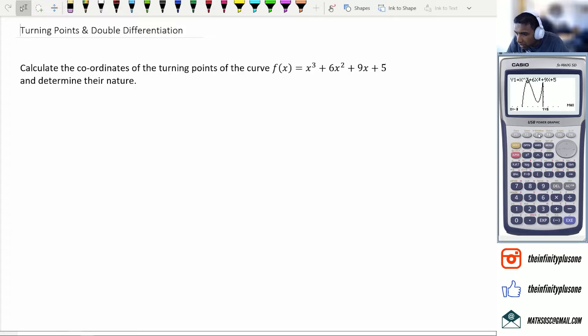And if you click on G-solve again, which is F5, you can also get the minimum point, which happens to be negative 1 and 1. Now, what we have to do is actually prove these points. So we know what the final answer is, but I want to show you how to get to that final answer using calculus.